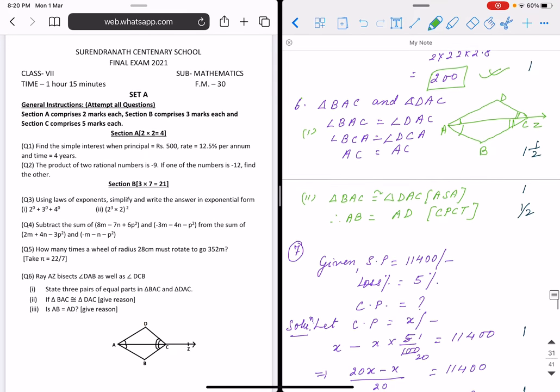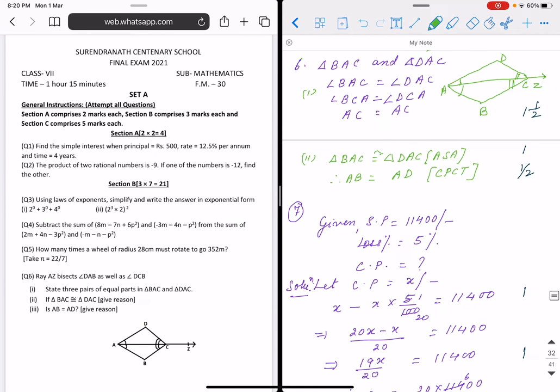Question number 6 is congruence of triangle chapter. Figure is given here, see question paper. This angle equals that angle is given. Both angles are given and this side is common. So we are writing angle BAC equals angle DAC, angle BCA equals angle DCA, AC is common. By which property are they congruent? A-S-A. Two angles and a side. Now, question is what is AB equals to AD? By corresponding parts of congruent triangles, CPCT.